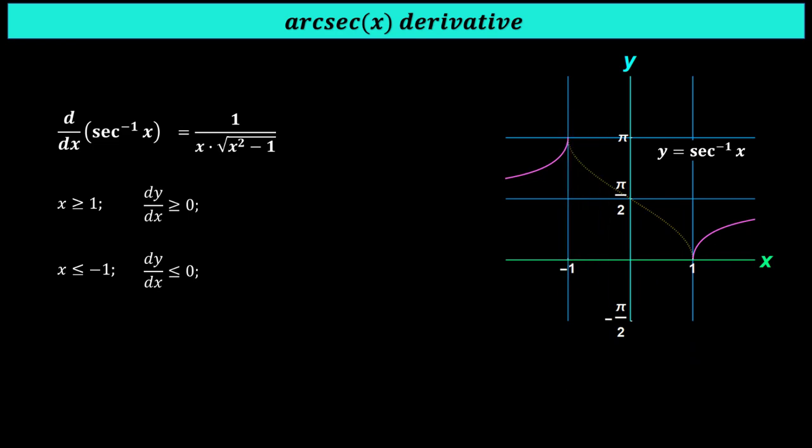Also, when x is greater than or equal to 1, the slope of this function is positive. On the other hand, when x is less than or equal to negative 1, the slope is also positive. In both cases, the slope is positive.